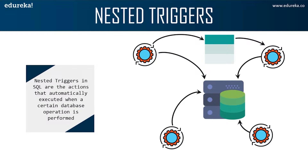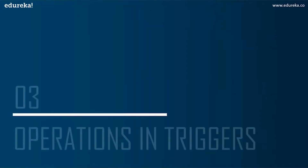You might be wondering in which scenario we can use a nested trigger. Let me share a scenario that will help you understand nested triggers better. Continuing from the earlier scenario, Anna sent an email for every new customer added to the company's database. Now, what if she wishes to keep track of the number of customers to whom the email was sent? Anna needs to create a nested trigger to keep the count along with sending the email. That was all about the syntax of triggers. Let's now implement an example of a trigger in SQL.